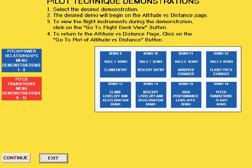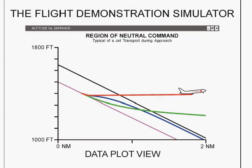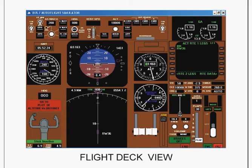The last eight demonstrations, numbers 9 to 16, illustrate the principles of making precise transitions from one flight path and airspeed combination to another. They will first be shown in the data plot view and then repeated in the flight deck view. Although these principles are demonstrated using a jet transport, they apply to all airplanes.